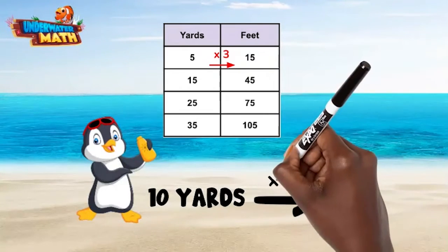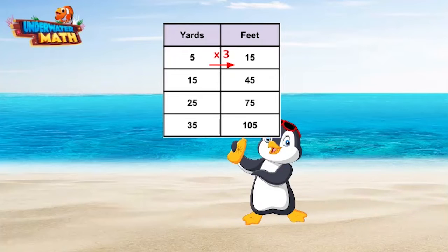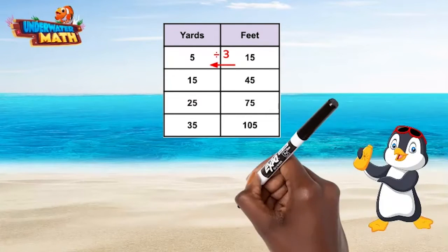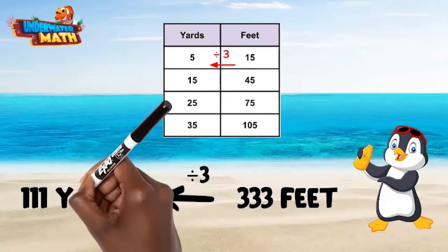What if I waddle back 333 feet? If we convert the other way, we would do the opposite. The opposite of multiplying by 3 is dividing by 3. 333 divided by 3 is 111. I waddled 111 yards.